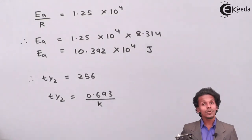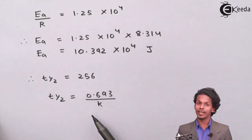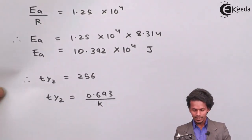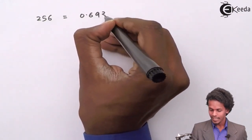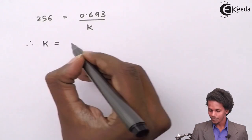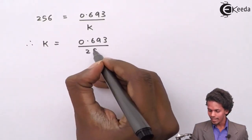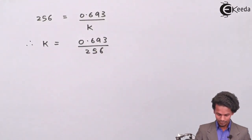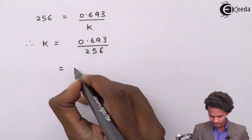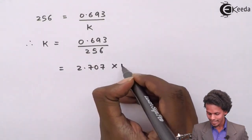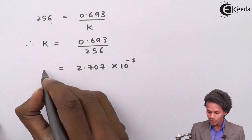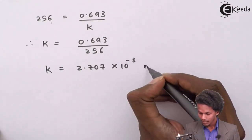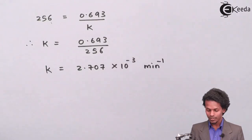We don't know the value of K, so we substitute the value of t½ to evaluate it. The value of t½ = 256 minutes = 0.693 / K. Therefore K = 0.693 / 256 = 2.707 × 10⁻³ per minute, so the unit of K is minute⁻¹.